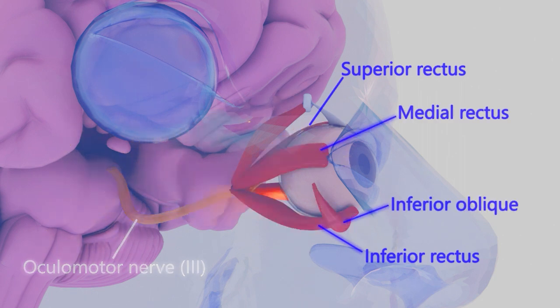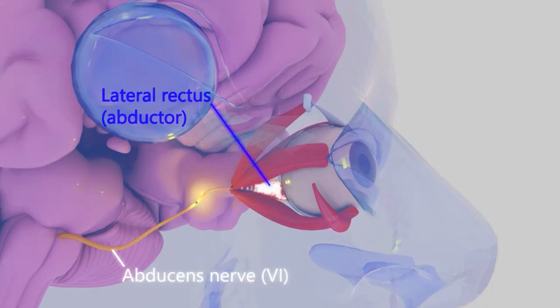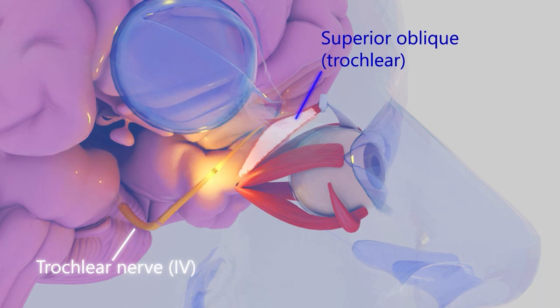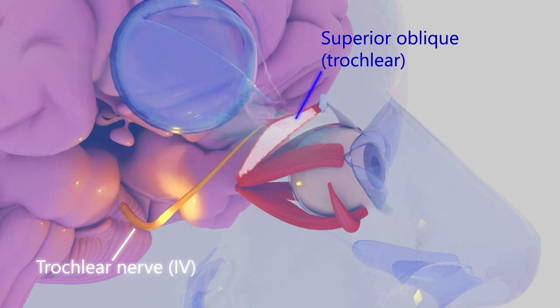The lateral rectus receives innervation from the abducens nerve. The superior oblique receives innervation from the trochlear nerve.